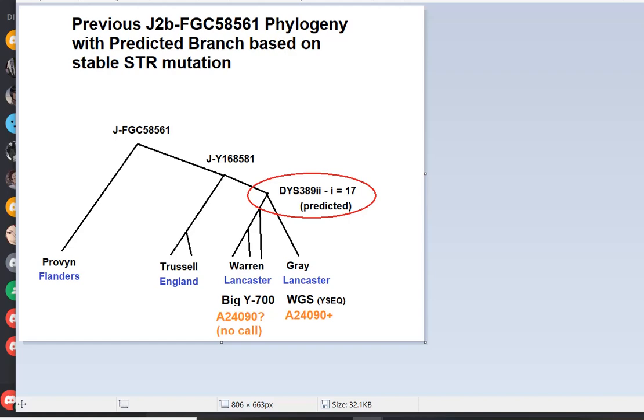Warren did a Big Y-700 test, and he wasn't confirmed positive or negative. There was no call. So this was a part of the Y chromosome that Big Y-700s don't cover. At least, I haven't seen any of them cover it from the guys that I looked at. So Y-Full could not create a branch there because those two guys did not share a SNP from the tests that they did.